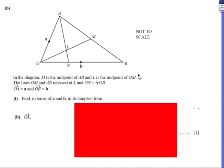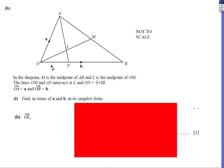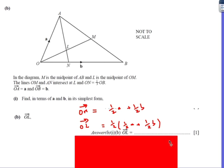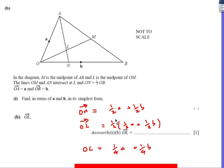Okay, next one, find OL. Okay, now let's have a look. It says L is the midpoint of OM, so L is the midpoint of OM. Well, I've already worked out that OM is a half a plus a half b. So if it's the midpoint of that, it's halfway along that vector, so I can just simply do a half of the vector OM. So if I know OM is a half a plus a half b, OL is a half of that, which is a quarter a plus a quarter b.